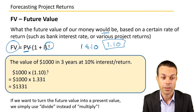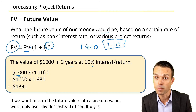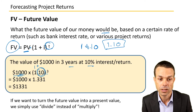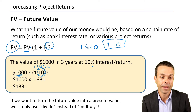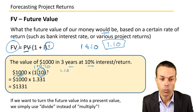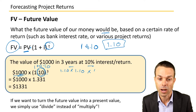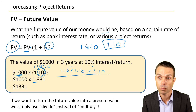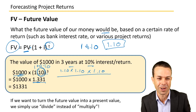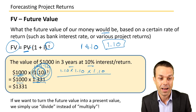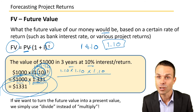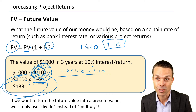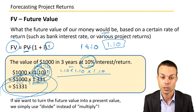Let's work through an example: the value of $1,000 in three years at 10% interest. We calculate $1,000 times 1.1 to the power of 3 — that means 1.1 times 1.1 times 1.1, which equals 1.331. So $1,000 times 1.331 gives us a future value of $1,331. That's how we figure out the future value at a given rate of return.